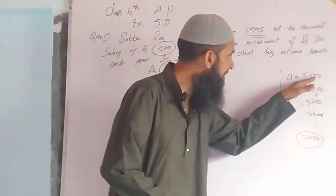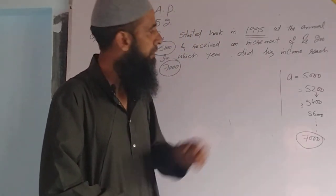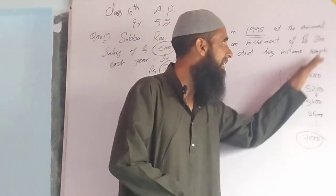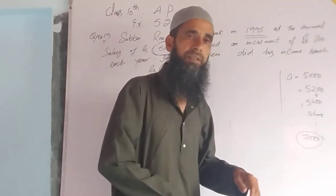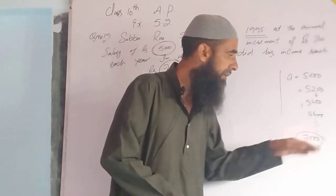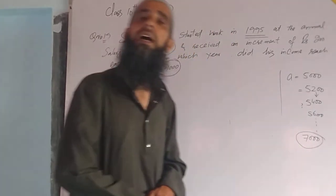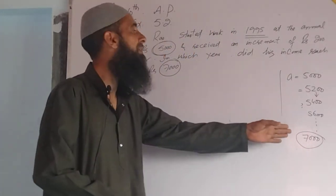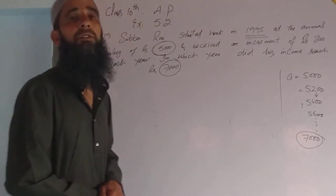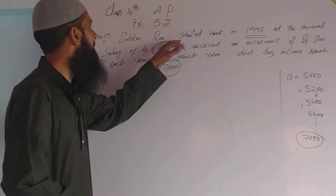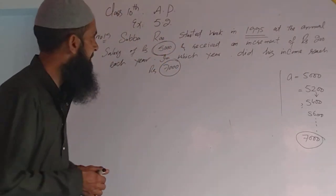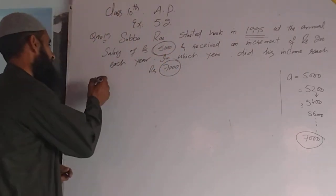In this AP, the first term we have is 5000. The common difference being added each year is 200. And 7000 is the last term of this arithmetic progression which we are required to find from this question.